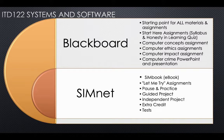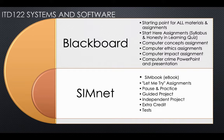Blackboard is also how you get to SimNet. Probably 90% of your assignments are submitted through SimNet, and they also include your SimBook, which is your eBook. Within your SimBook are the Let Me Try assignments — as you're moving through the eBook, you'll see a button that says 'Let Me Try,' and you need to complete each of those for the chapter you're working on. The second type of assignment in SimNet, beginning with Word Chapter 1, is the Pause and Practice.